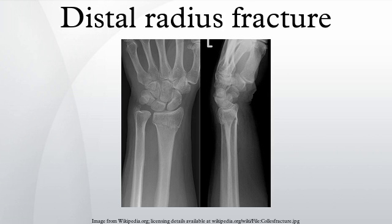The type of treatment required depends on many factors, including displacement and stability of the fracture fragments. For torus fractures a splint may be sufficient and casting may be avoided. Where the fracture is undisplaced and stable, nonoperative treatment involves immobilization. Initially the wrist is splinted to allow swelling to subside, and subsequently a cast is applied. Depending on the nature of the fracture, the cast may be placed above the elbow to control forearm rotation.